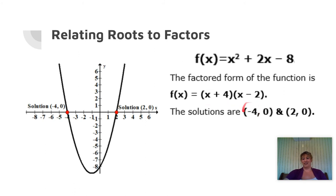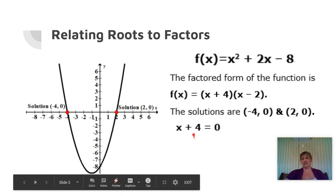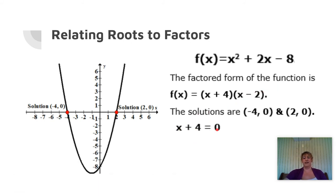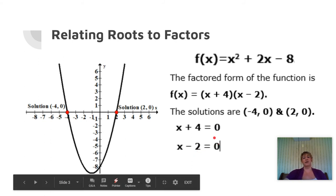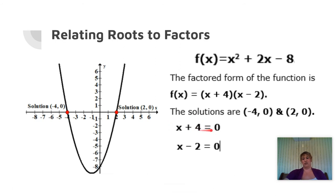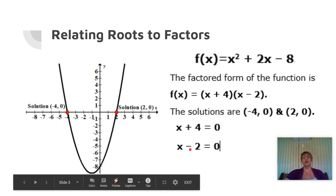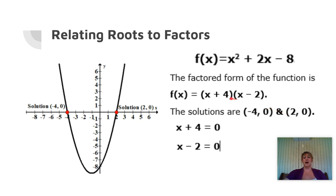Hopefully you notice that the numbers are the same but the signs are different. In the factor we have a positive 4, and the solution is negative 4. In the factor we have a negative 2, and the solution is positive 2. So our factors are just the opposite sign of our solutions. Here's why: x-intercepts are also called zeros, so if we set each factor to 0 — x plus 4 equals 0, or x minus 2 equals 0 — and solve for x, we subtract 4 from both sides to get x equals negative 4, or we add 2 to get x equals positive 2. That's why the solutions are the opposite signs of the factors.